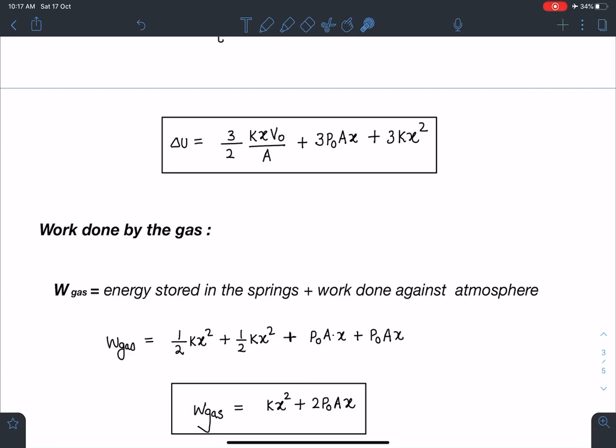When we simplify this, half Kx squared energy in one of the spring, then for second one. Then I can write here this work done against the atmosphere. If you see, atmosphere this side is compressed by Ax against the pressure of P0.